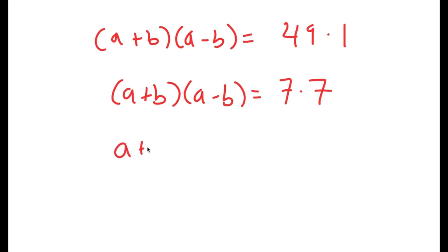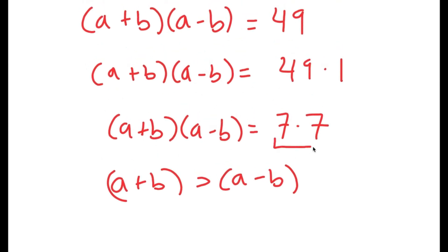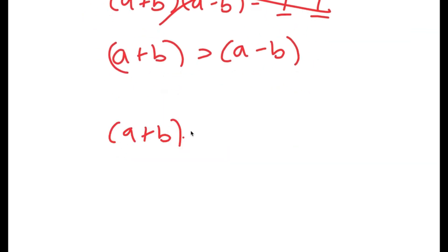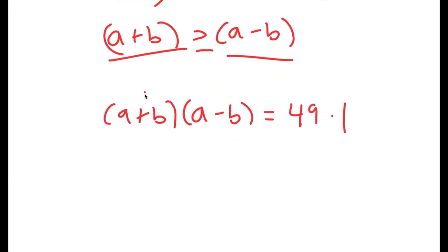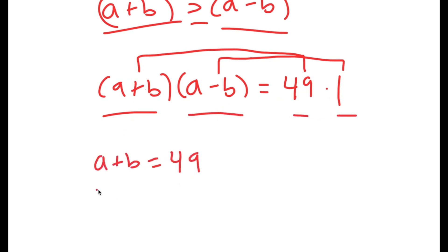We obviously know that a plus b is going to be greater than a minus b. So we can't rewrite a plus b times a minus b as 7 times 7, since 7 and 7 are equal. So that possibility is out, and 49 times 1 is the only possibility, meaning we go back to a plus b times a minus b is equal to 49 times 1. So because a plus b is greater than a minus b, we can say that a plus b is equal to 49 and a minus b is equal to 1.